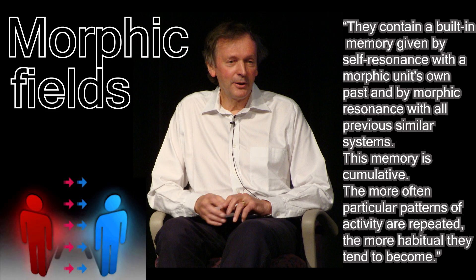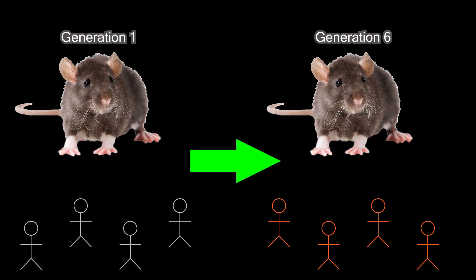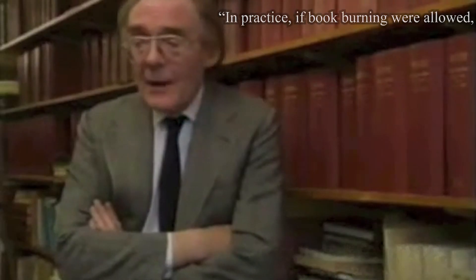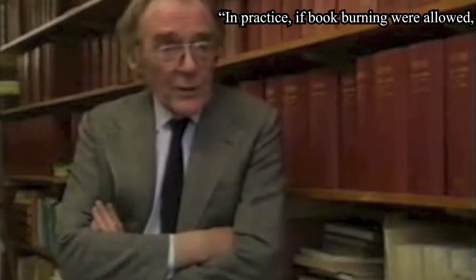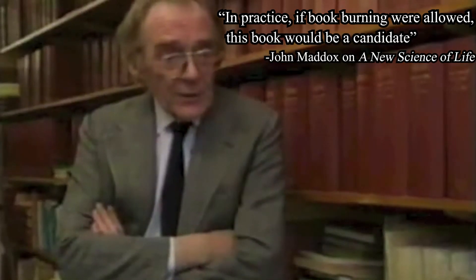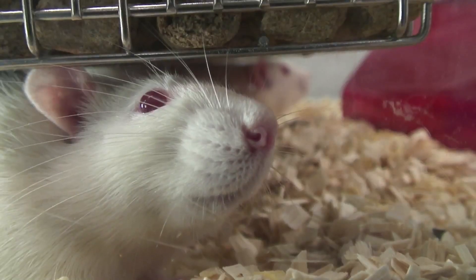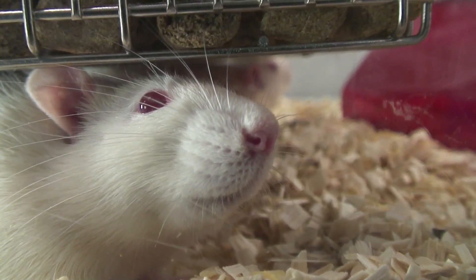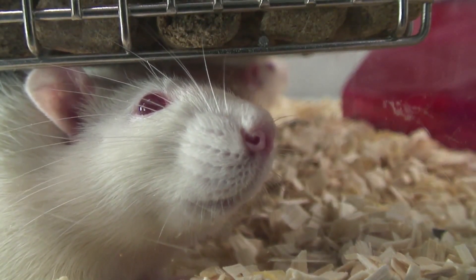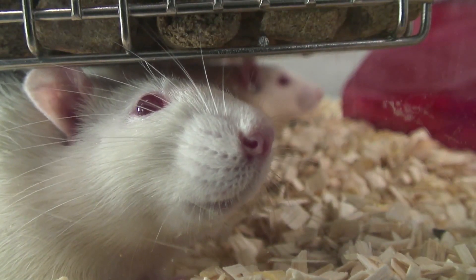His theory involves these invisible fields that receive and transmit data involving living beings. His explanation for the experiment he conducted is that, once many people or animals are aware of the solution to a problem, others will intrinsically be able to solve that same problem. Needless to say, the idea of morphic resonance is a bold one that has had its share of criticism — in practice, if book burning were allowed, this book would be a candidate. But the results of these experiments should be viewed not as concrete proof of the concepts, but as enough reason to not immediately disregard morphic fields as pseudoscience.